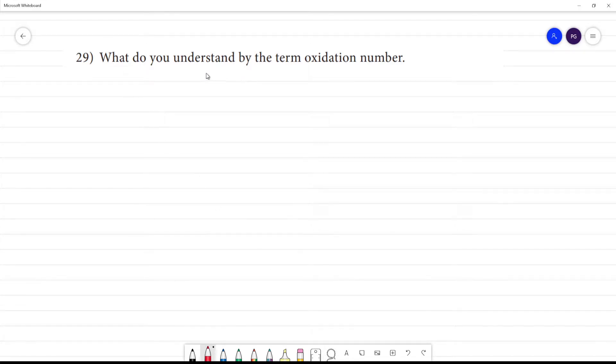What do you understand by the term oxidation number? Oxidation number is the total number of electrons that an atom either gains or loses.